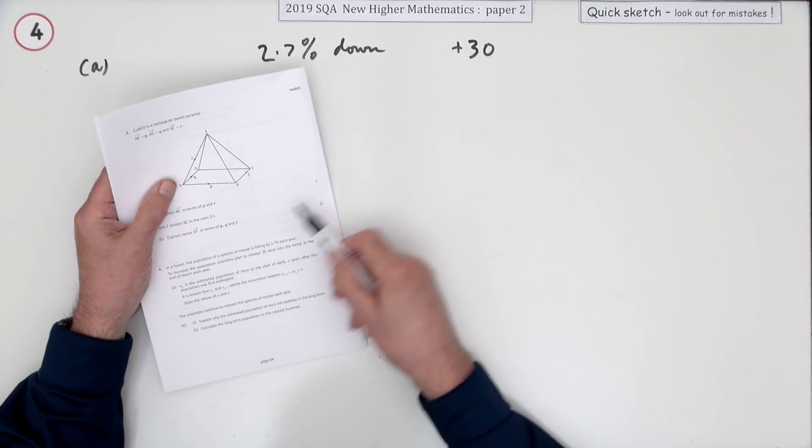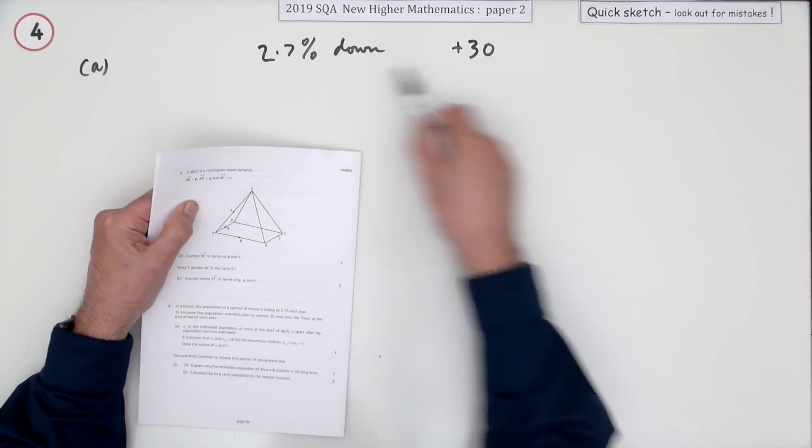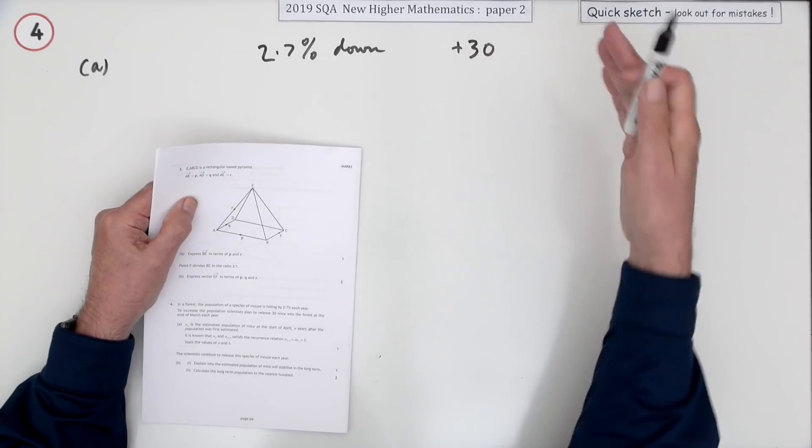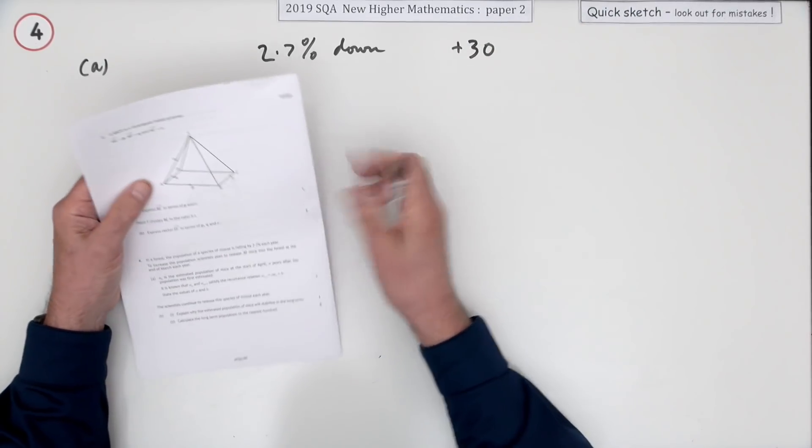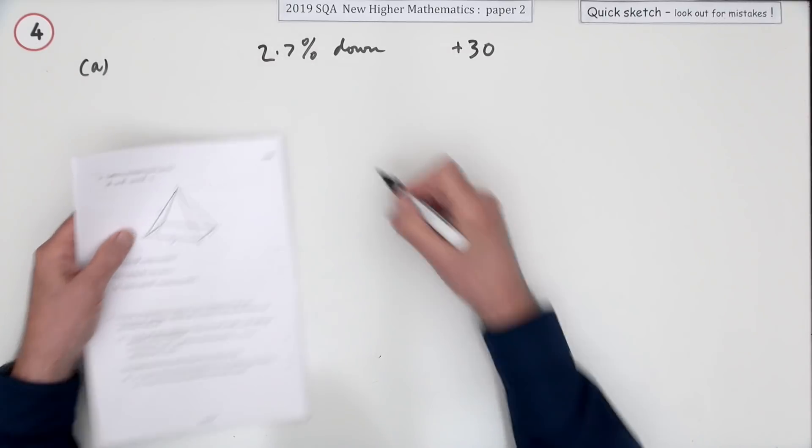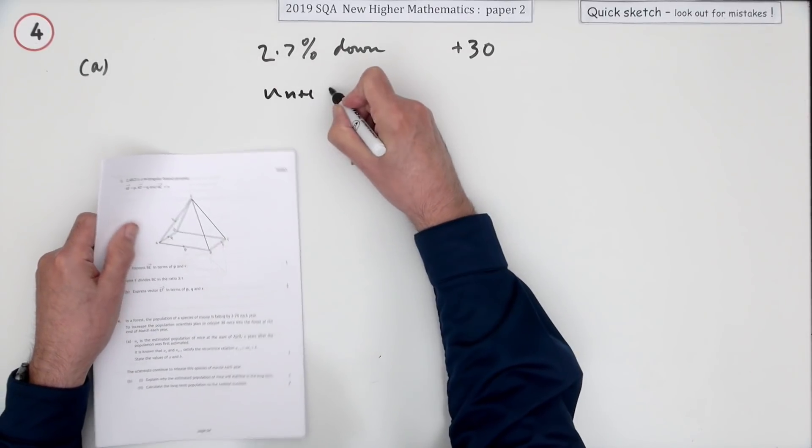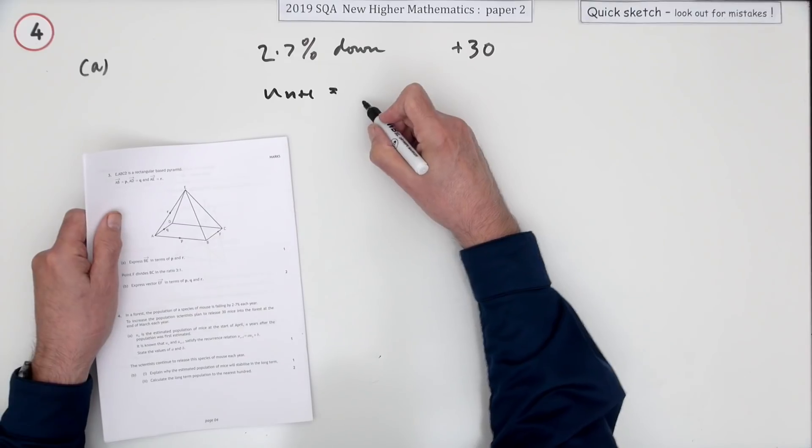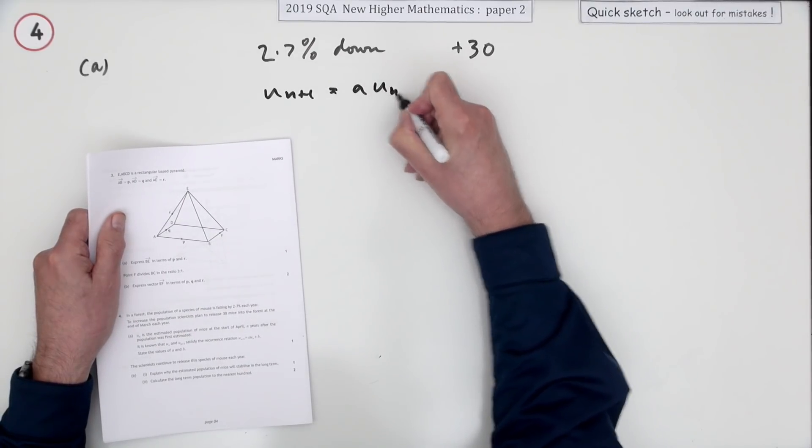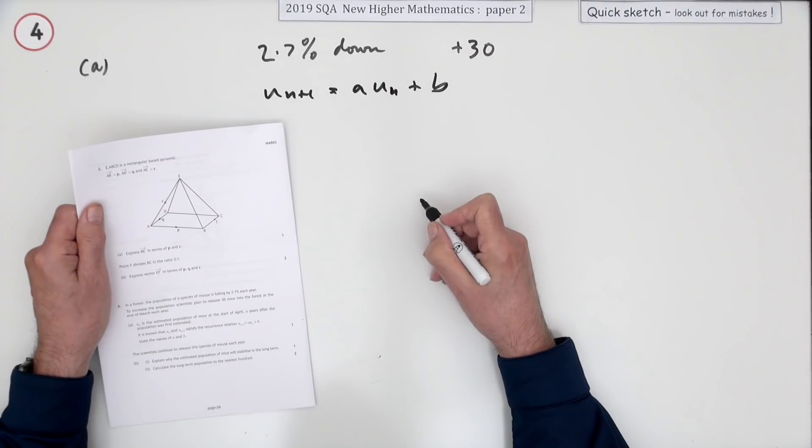It gets worrying here when they mention months like March and April because you begin to think, oh have you got to divide it up into months when you're given yearly amounts. But you don't because all it says for one mark is it's known that UN+1 satisfies the recurrence relation a UN + B, state the values of a and B.